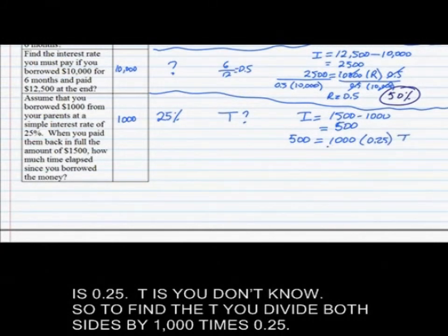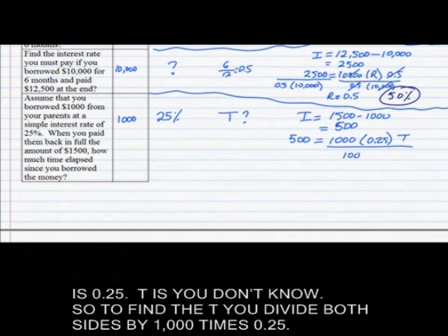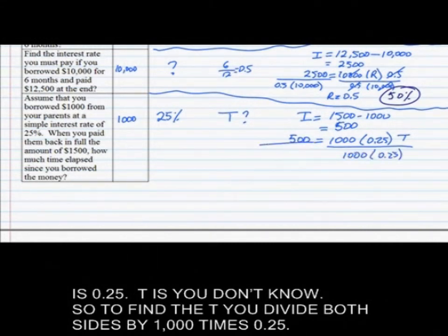To find T, you divide both sides by 1,000 times 0.25. When you do that, you'll get T of 2. What does that mean? You pay them back in two years. That's the answer.